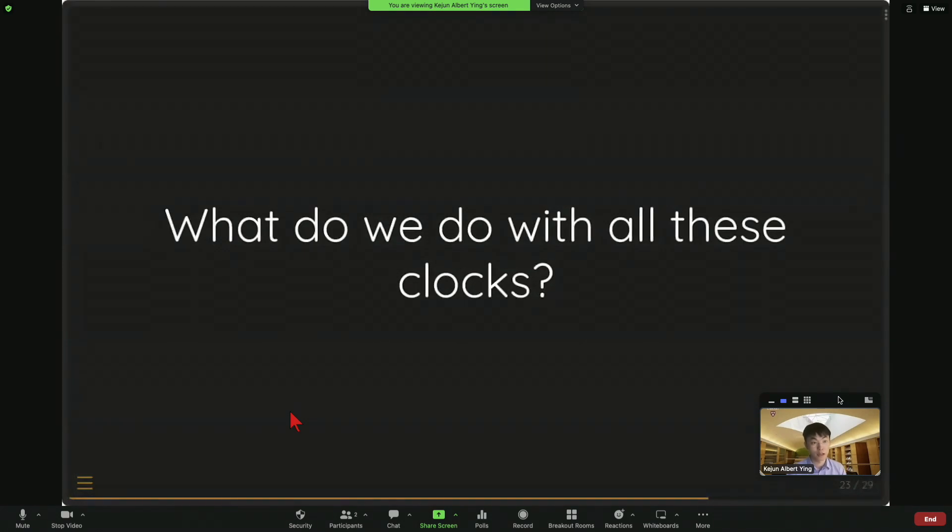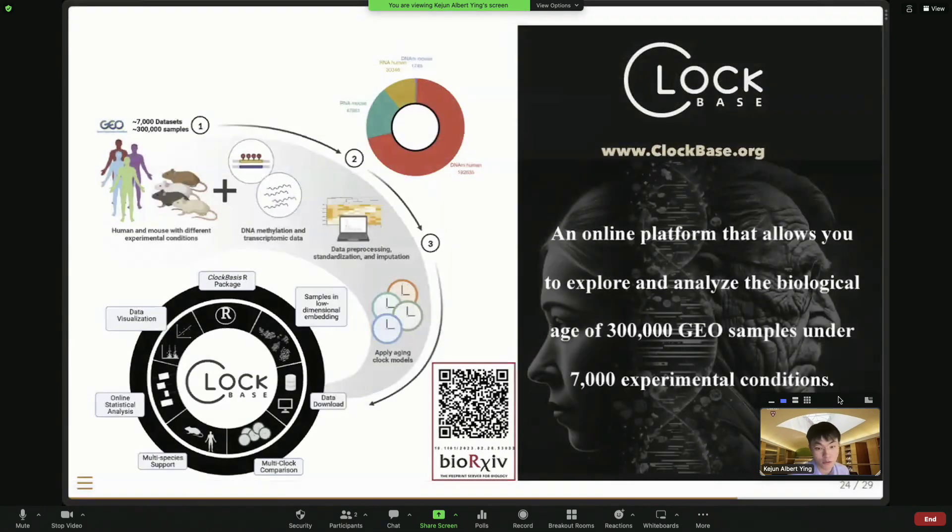So let's move to another topic. So why we built all this clock? To me, we built the clock to test intervention, right? So here we collected all the information from GEO. So there are over 200,000 samples in both human and mouse. We collected methylation and gene expression data, and we do this standardization. And then we apply all existing, almost all existing clock models to them. So for each sample, we have a series of methylation or transcriptomic age prediction. And it's actually online. Actually, we put it online maybe almost a year ago.